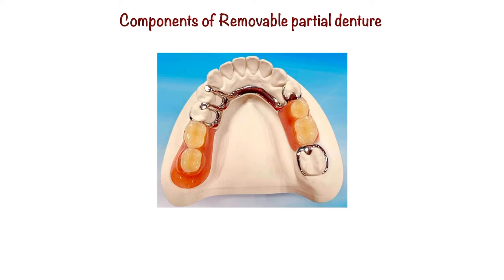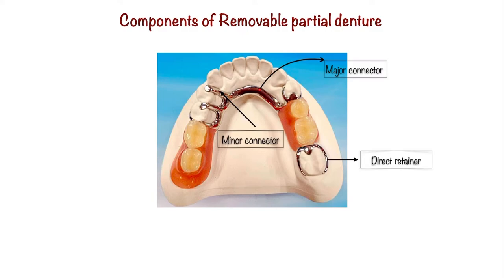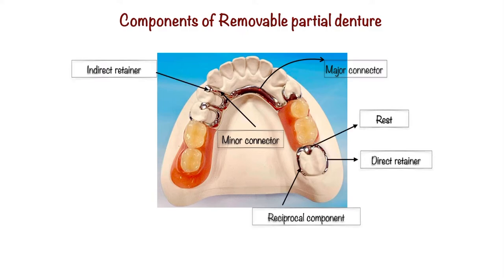The components of removable partial denture are: major connector, minor connector, direct retainer, rest, reciprocal component, indirect retainer, denture base, and artificial teeth.